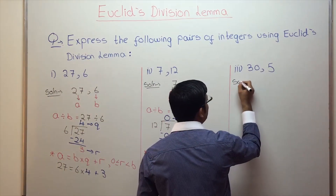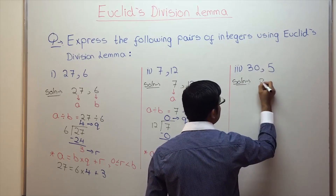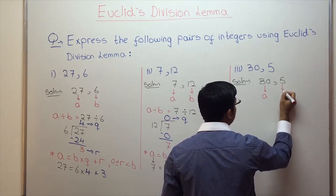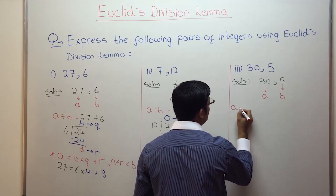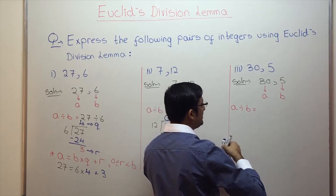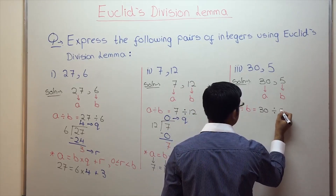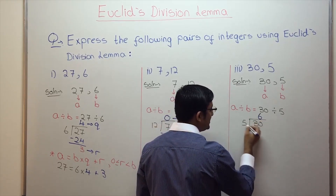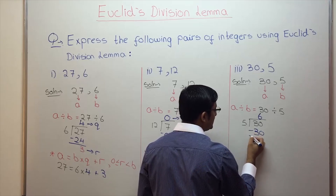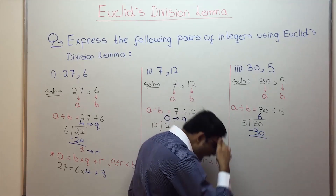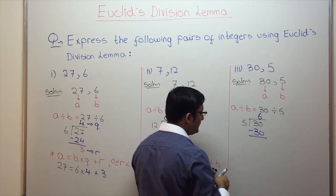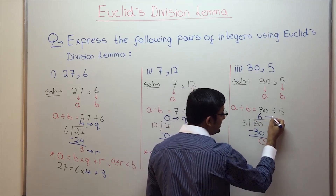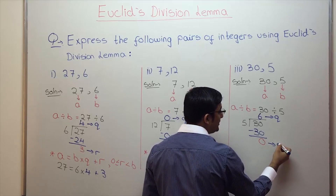Next pair: 30 and 5. Copy your two integers in the same order: 30, 5. Label the first integer as A and the second integer as B. Next, A divided by B, that is 30 divided by 5. 5 goes into 30 six times. 6 into 5 is 30. 30 minus 30 is 0. Any more digits left? No. Quotient is 6 — label it as Q. Remainder is 0 — label it as R.